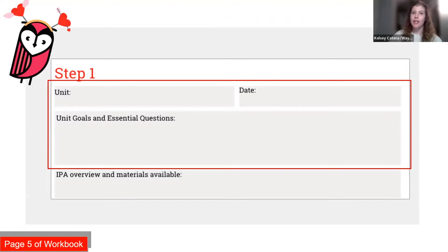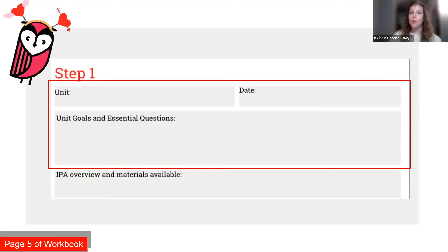We're going to start by setting the scene for this unit. If you attended our January series on planning for proficiency, you may remember that identifying unit goals is the very first step of the backward design process, followed by determining assessment evidence. Because of this, we'll start our IPA planner by filling in unit goals and essential questions, then continue to determine assessment evidence by filling out the rest of the sections. I'm using Entreculturas 1, Unidad 5 — this would be approximately where I'd be in my curriculum in Illinois at this time of year.